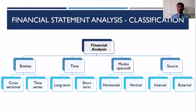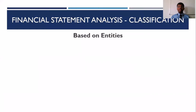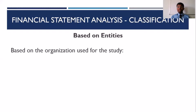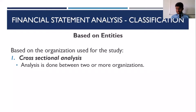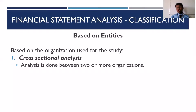Let's talk about each of these in detail. The first classification is on the basis of entity — how many organizations are involved in your analysis. Based on the number of organizations involved in your study, you have cross-sectional analysis. Cross-sectional analysis is the analysis done between two or more organizations — you are comparing one organization with another.